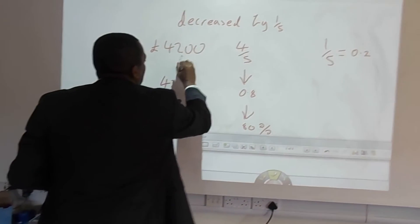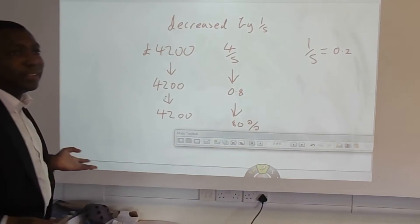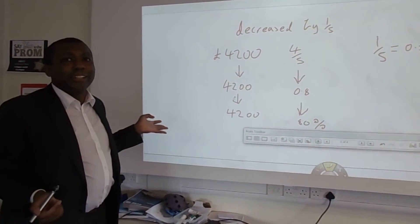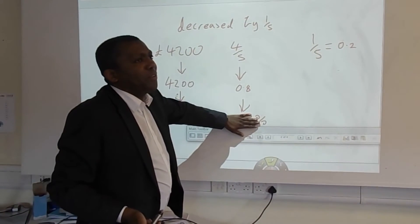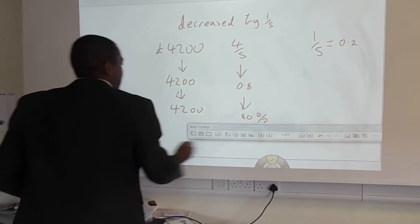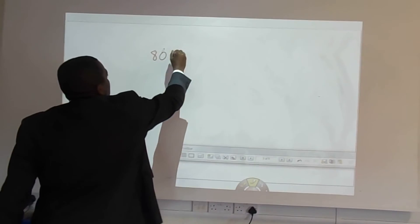So you can work either in decimals or percentages or combinations. I'm working in a combination, as you can see. So 4,200 is 80% of the original value. I then do what Mr. Delaney said in his previous video.